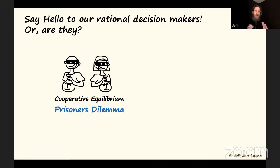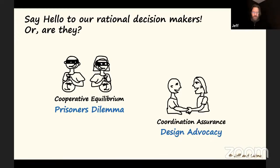Today we're going to cover two games. The first is a cooperative equilibrium game called Prisoner's Dilemma — a primer you'd encounter in any game theory 101 class. Then we'll look at coordination assurance and explore what game theory has to do with design advocacy. The two key words to take away are 'cooperative' and 'coordination,' as they're very important in how we apply these games.